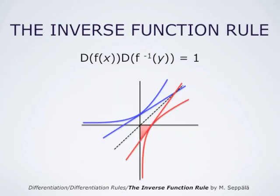To summarize, by considering the right-angle triangle bounded by the red tangent line and the coordinate axes, we have obtained the inverse function rule: the derivative of a function at x times the derivative of the inverse function at the corresponding point y equals 1. A very useful rule.